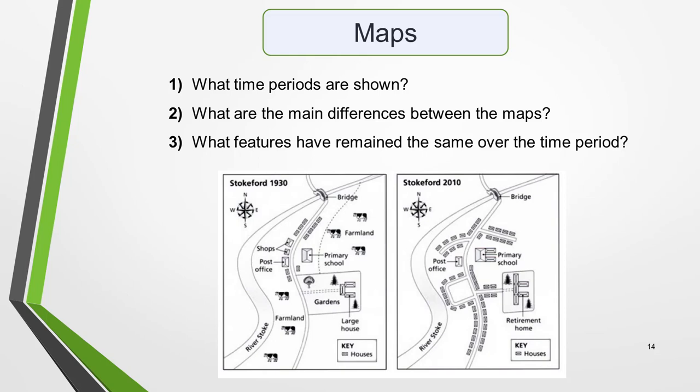Here is a short checklist of questions to help you understand and analyse map questions. Question 1: what time periods are shown? Is the data from the past, the present or the future? This is important to note because it will determine whether you should write in the past, present or future tense. These two maps show the village of Stokeford in two different times in the past. Question 2: what are the main differences between the maps? What features have disappeared, and what new features are in their place? Question 3: what features have remained the same over the period of time? Although the location will have undergone major development, some features will probably remain unchanged.